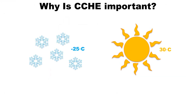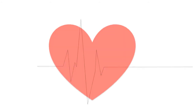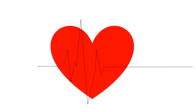CCHE is important because it allows animals living in extreme conditions to survive in their habitats and keep their bodies functioning the way they should. Without CCHE their hearts will have to pump blood much faster to try and maintain a constant temperature. This increase in stress on the heart could kill the animal.